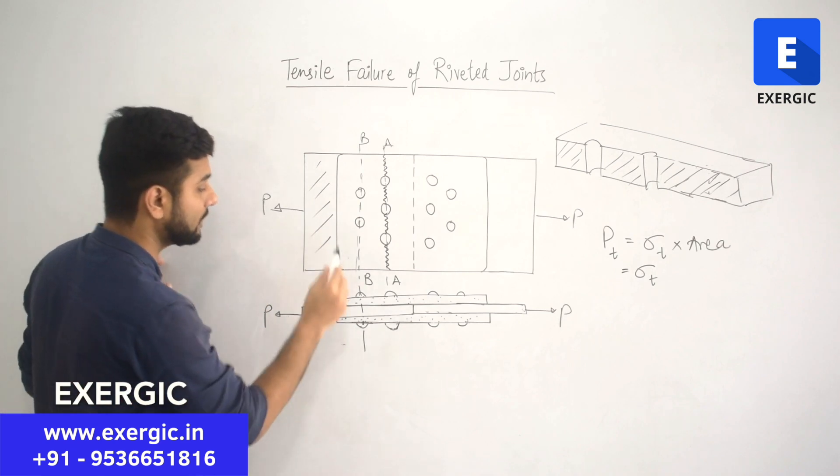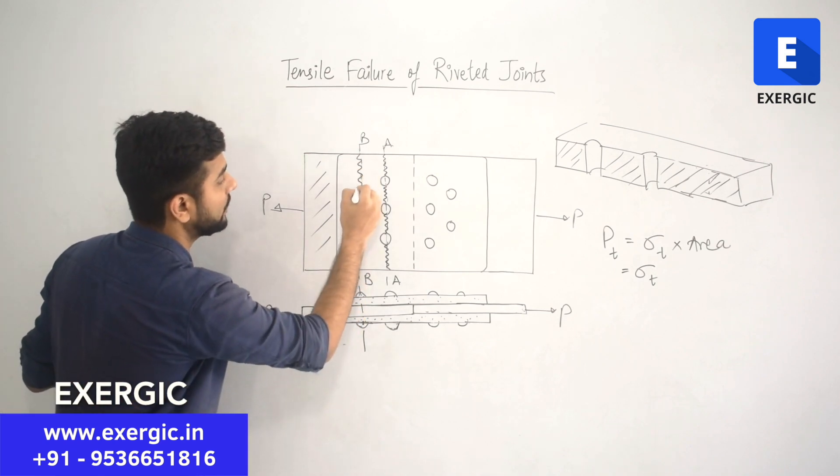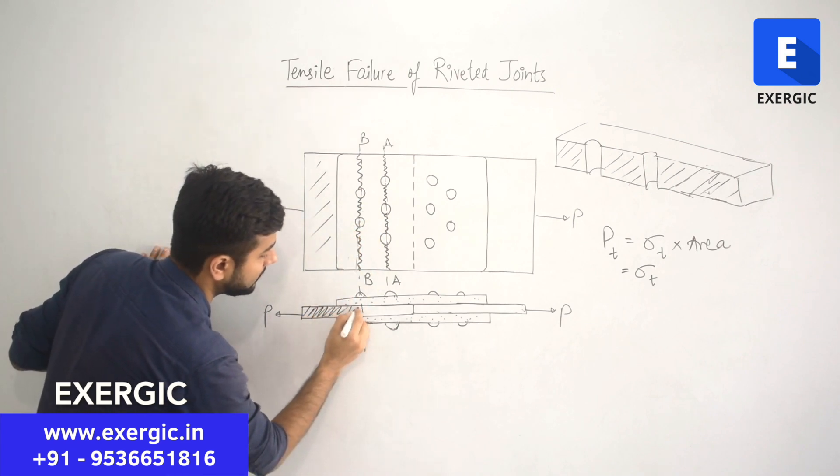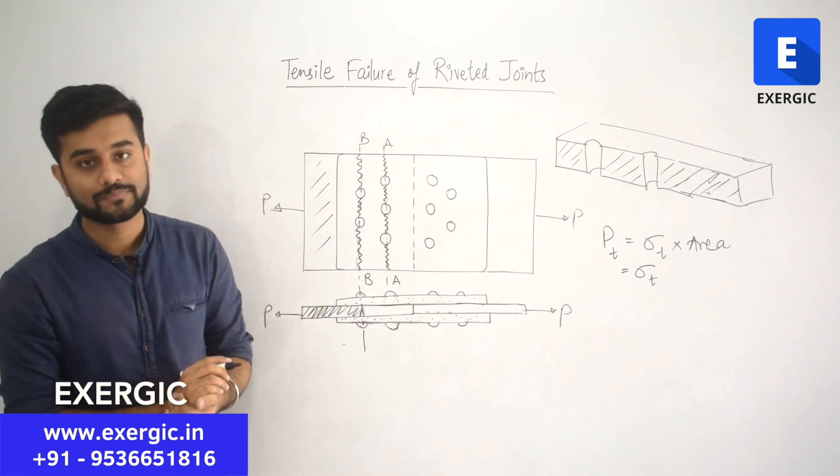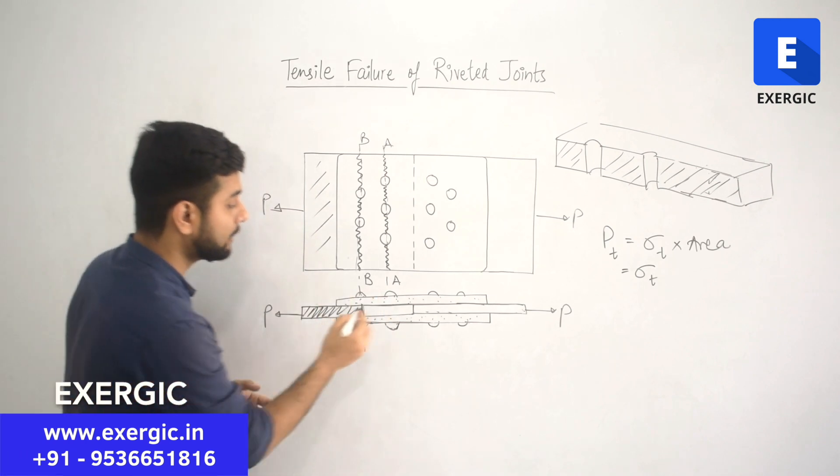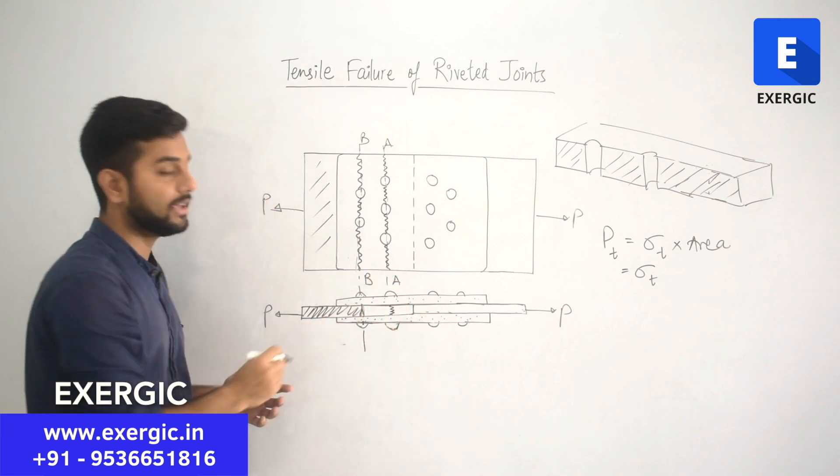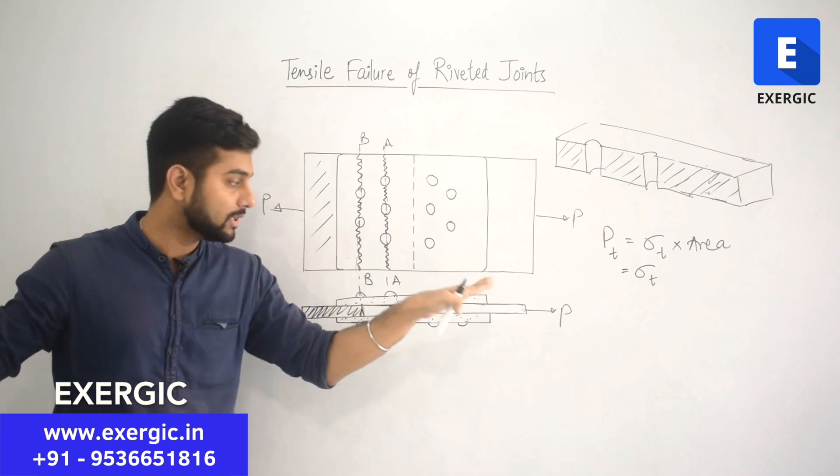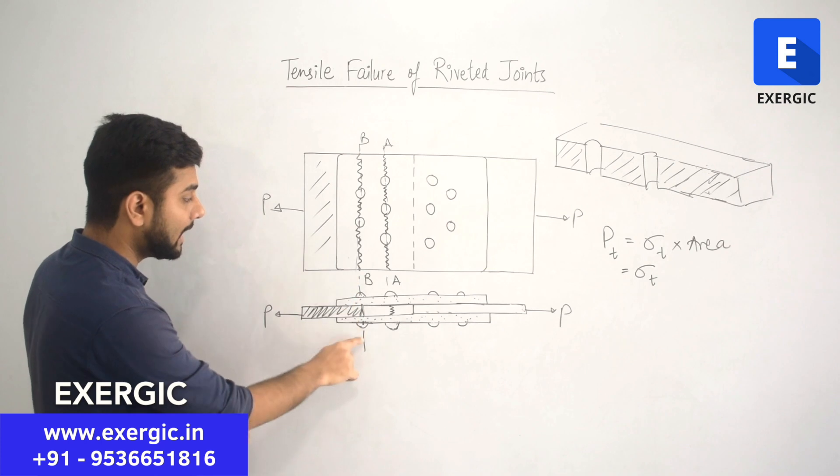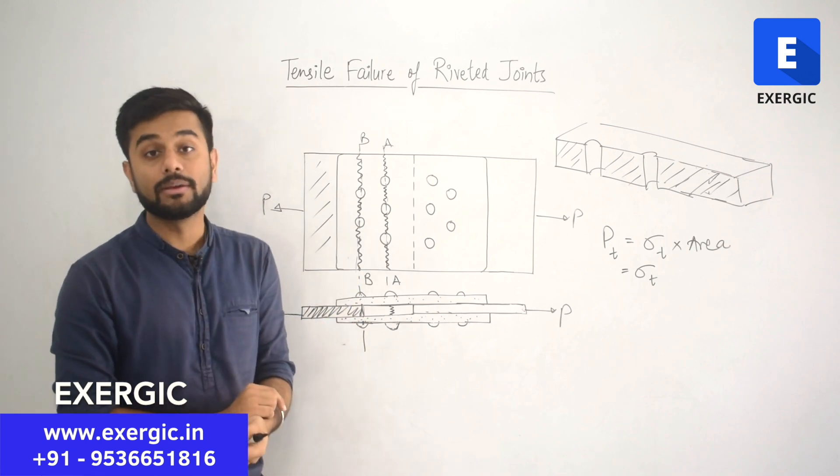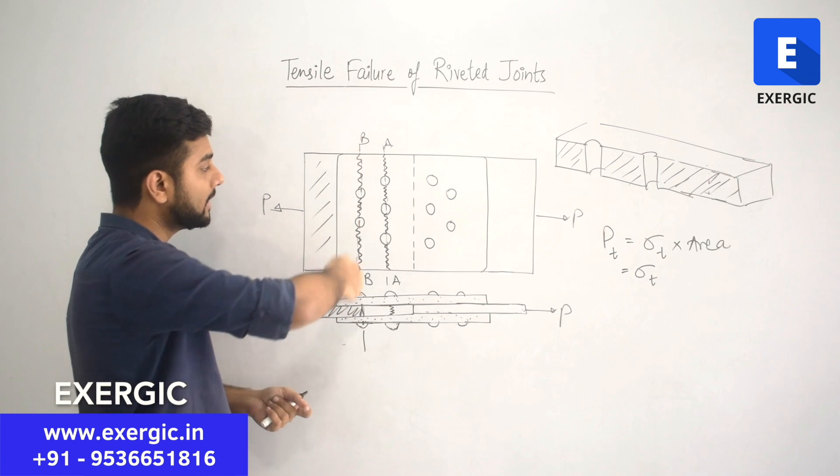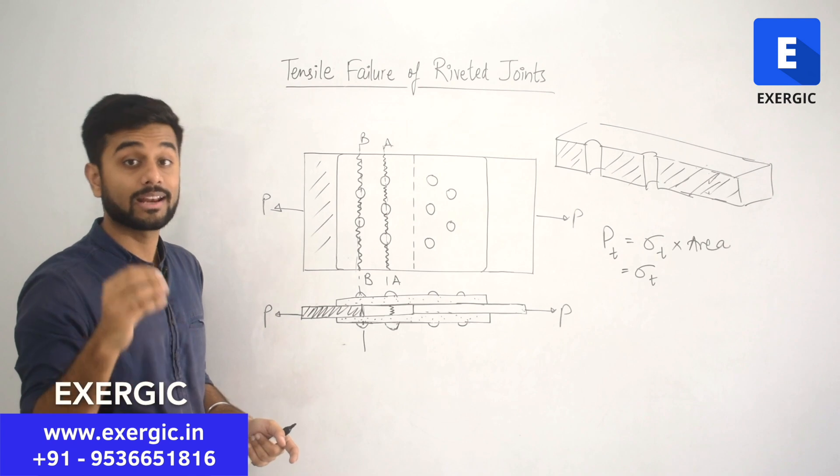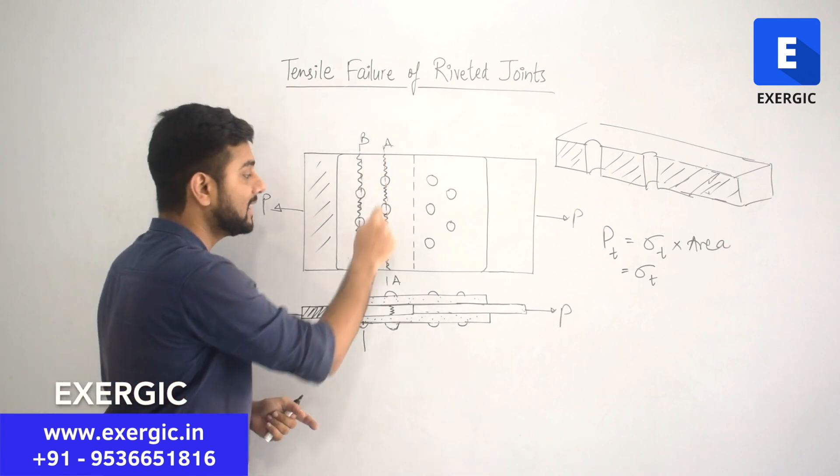But when section BB is going to fail, section BB of plate is going to fail, then what will happen? Basically, this section fails of the plate. Then this region of the plate will move to the left. Earlier when plate was getting fractured from A, still it was not going out. Still it was not moving away from the other plate because it was connected at the section BB. But when this section of the plate is going to fail, then this part will move away, right? Irrespective of whether it failed at AA or not.